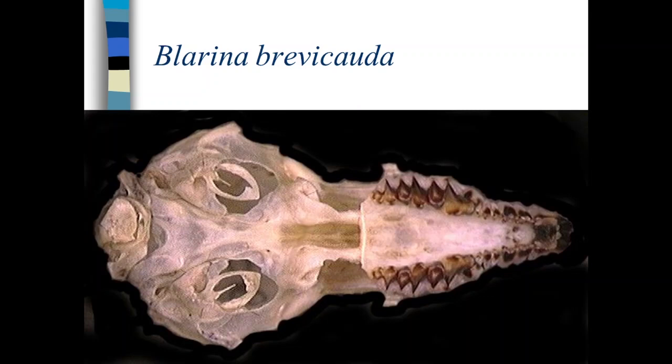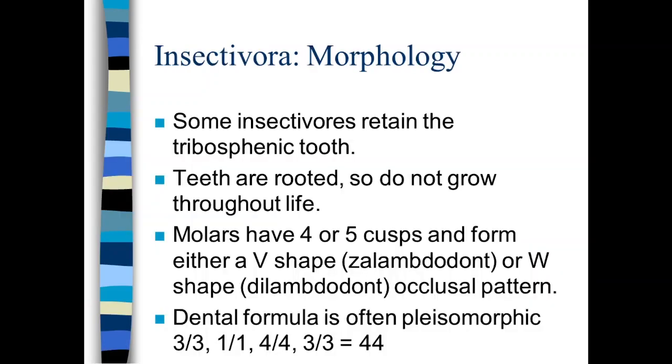Here's a nice example of Blarina brevicauda. You can see the absence of the auditory bulla replaced instead or substituted instead by the tympanic bone. The absence of the jugal, so there is no zygomatic arch. And of course, the other thing to note is the dentition. It's this nice dilambdodont dentition.